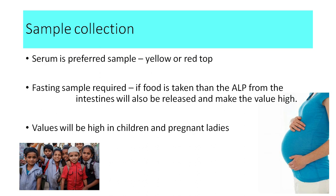What is the sample used for testing alkaline phosphatase? The preferred sample is serum, so we can use a yellow or red top vacutainer. A fasting blood sample is preferred for this test. Since alkaline phosphatase is present in the intestines, if a person has eaten food before sample collection, the intestinal component will also produce alkaline phosphatase, giving falsely high values. Therefore, only a fasting sample should be taken.